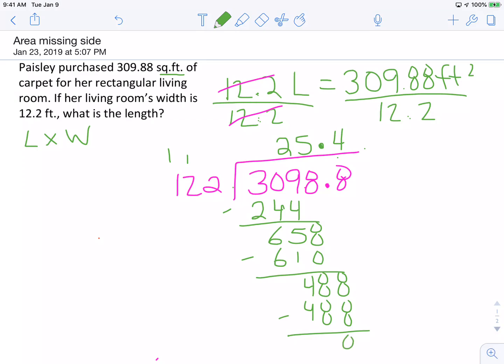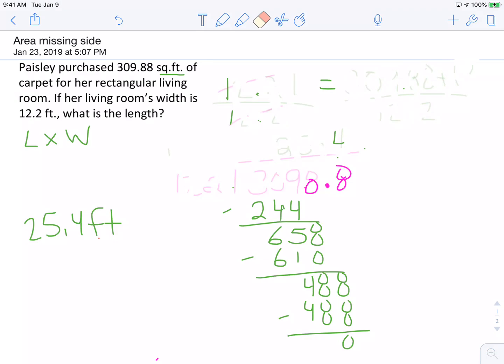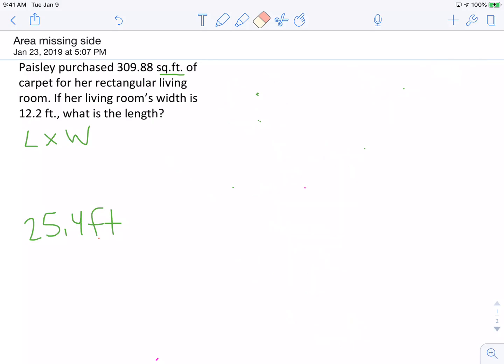So the length is 25.4 feet. Now I am never satisfied with just keeping it like that. I'm going to go back and check my work to make sure I'm correct, because when you're dealing with stuff like this, you can make careless mistakes. So I now know that my length is 25.4 feet, my width is 12.2 feet. So I'm going to take those two numbers and multiply by each other, and it should equal 309.88.